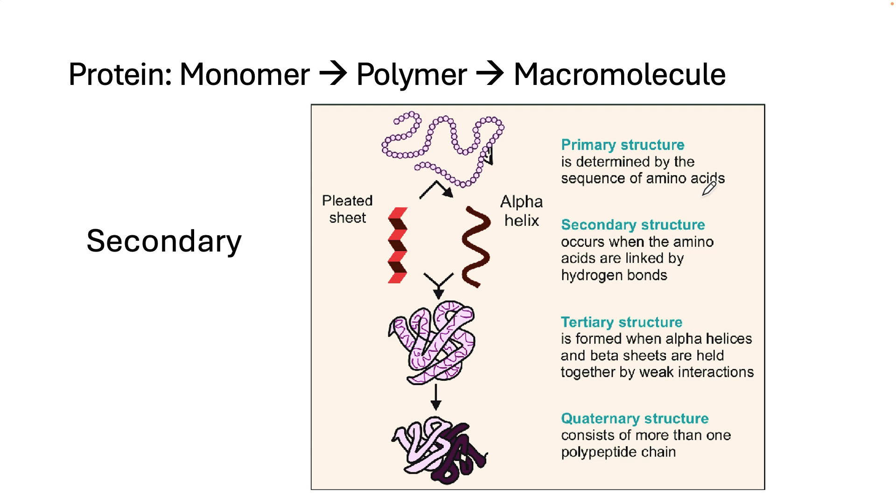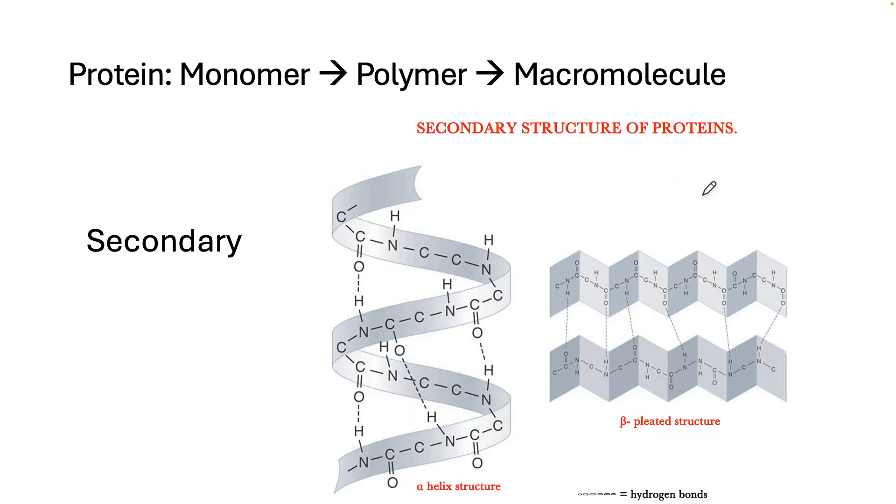Secondary structure is when small areas of that long string of amino acids fold up because of the hydrogen bonds we just talked about. You can see that the hydrogen bonds between the oxygen of one amino acid and the hydrogen on a different amino acid are attracted to one another. Here we have another dotted line showing that there's a hydrogen bond between them.